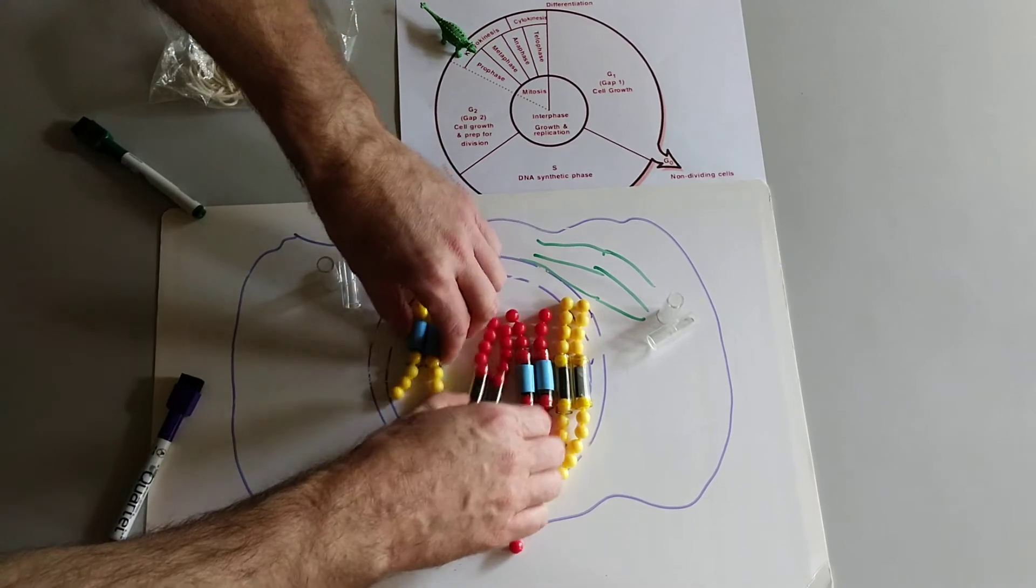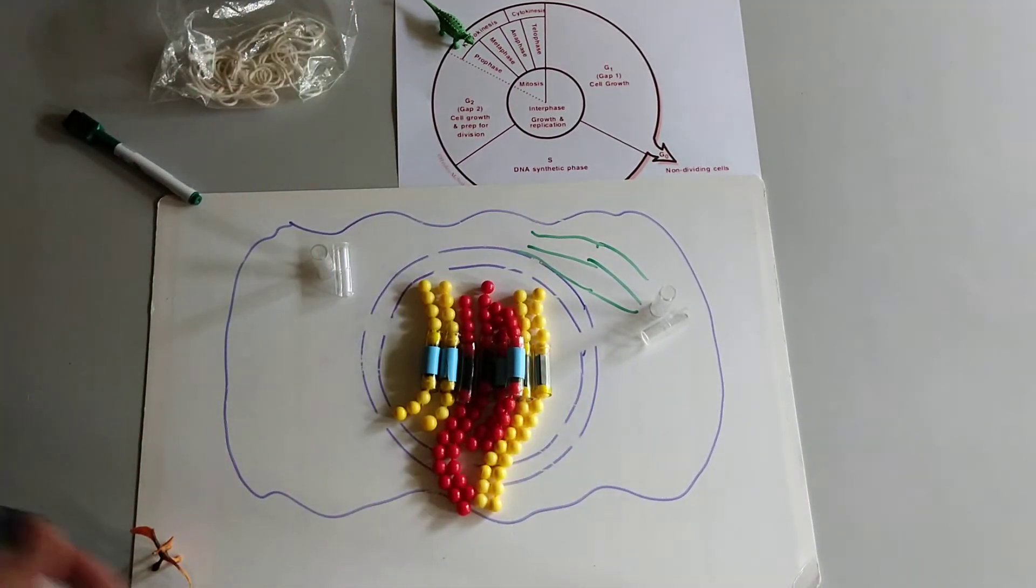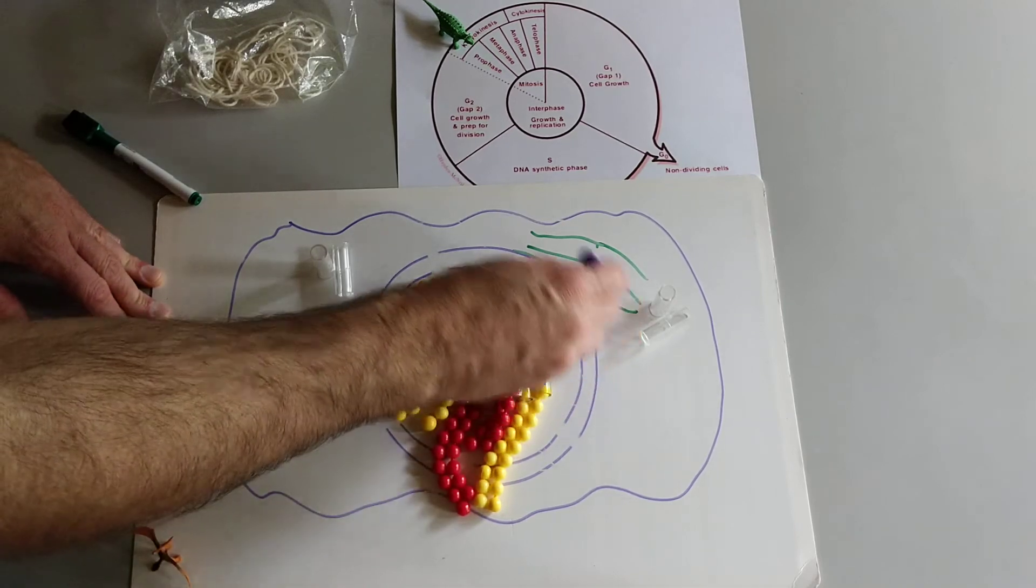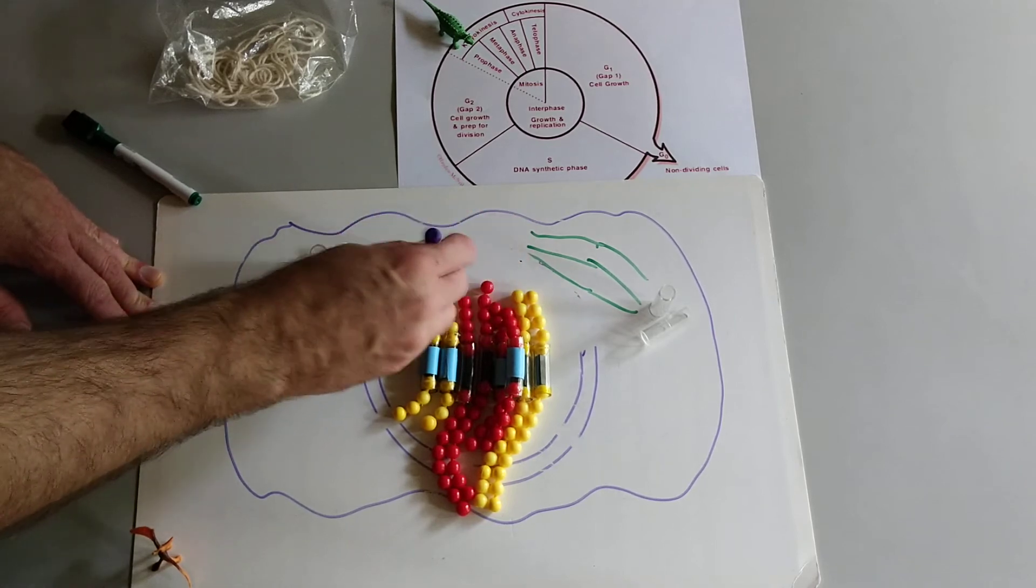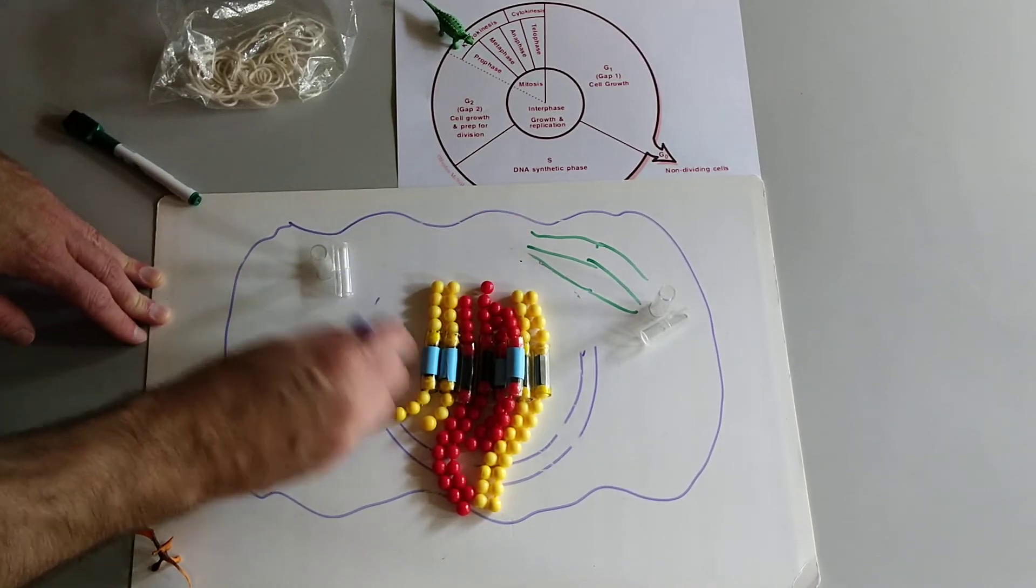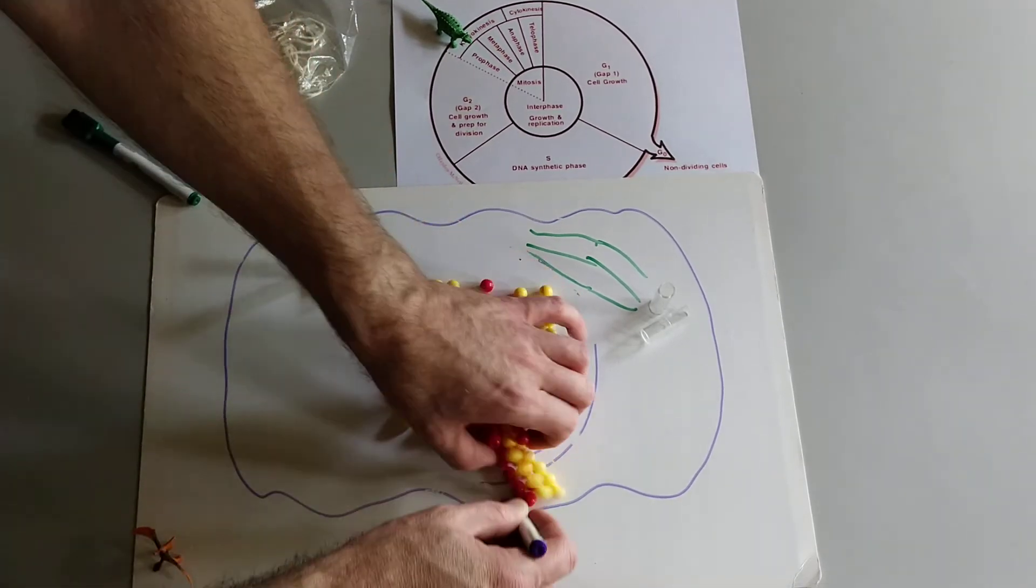The other thing that happens during prophase is that the nuclear membrane breaks down. So it gets fragmented into little tiny pieces that can be reused later. We're just going to erase the nuclear membrane.